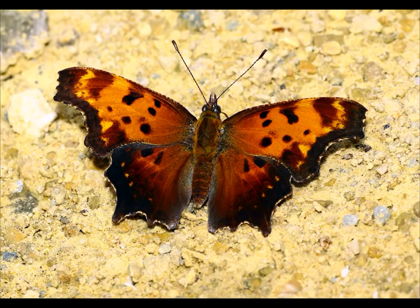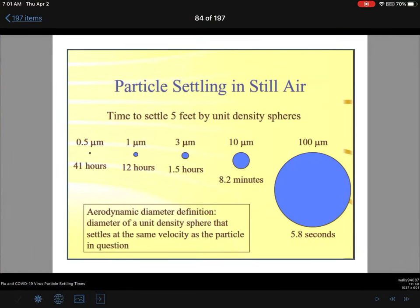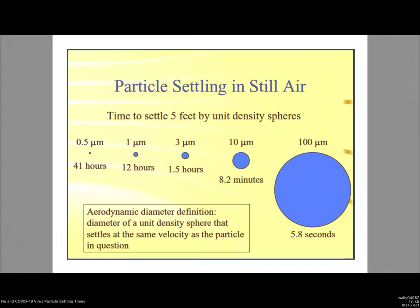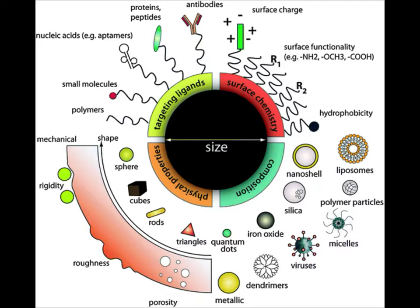The other thing about being out in nature when quarantining is there are lots of places kids can go and look. This is the picture I was looking for. It says 'particle settling in still air - time to settle 5 feet by unit density of the spheres.' A really small particle takes 41 hours to settle; a 100-nanometer particle takes 5.8 seconds to settle; a 0.5-nanometer particle takes 41 hours. Depending on the size of the particle, a smaller particle takes longer to settle than a larger one.